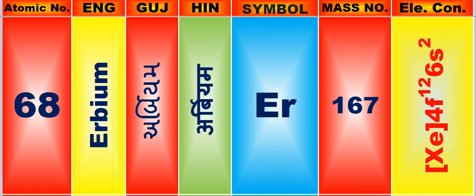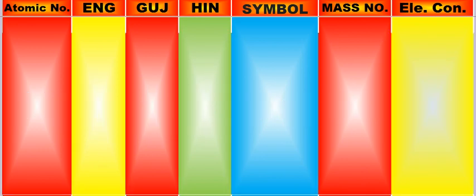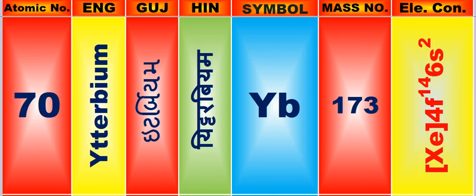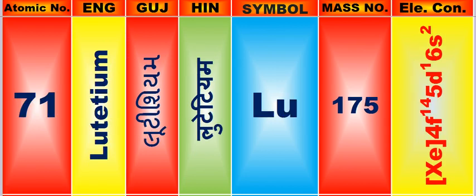Atomic number is 68, name of atom is Erbium. Atomic number is 69, name of atom is Thulium. Atomic number is 70, name of atom is Ytterbium. Atomic number is 71, name of atom is Lutetium.